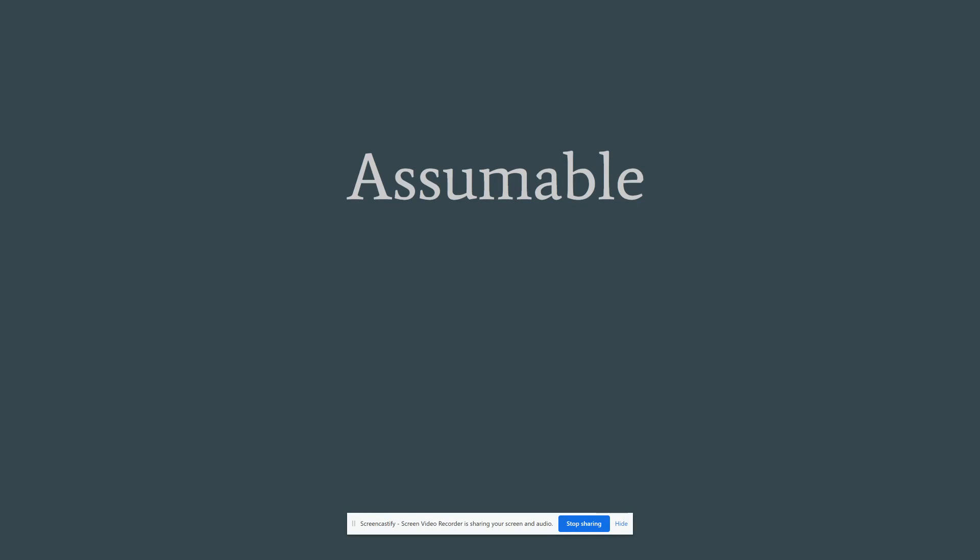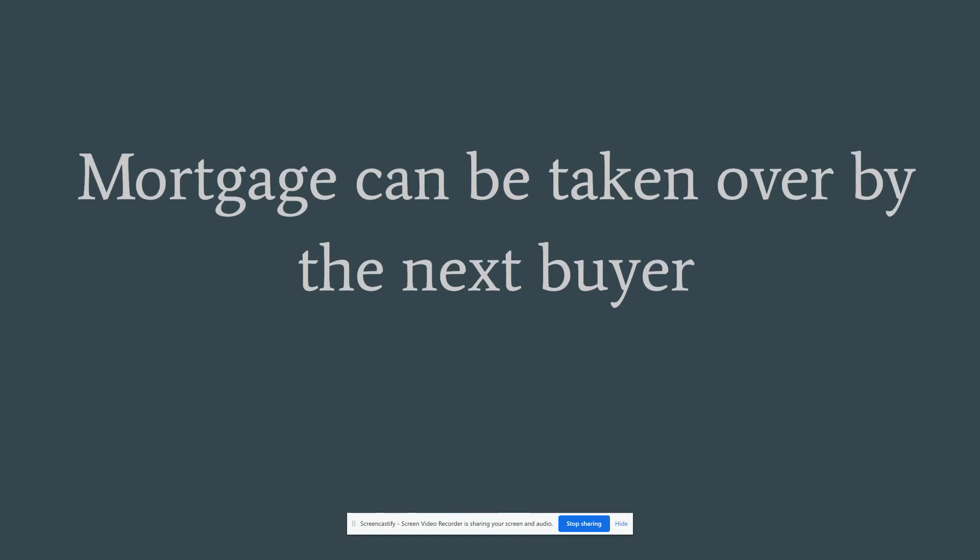Assumable — a mortgage that can be taken over by the next buyer. Some textbooks say VA loans past 1988 are not assumable. What actually changed in the late 80s — for VA and FHA loans — is that you now have to qualify for the loan. You can't just have anybody come in and assume it; they have to show credit worthiness to take that loan on. So if your textbook says a VA loan past the late 80s was not assumable anymore, that is incorrect. The new borrower has to prove credit worthiness.